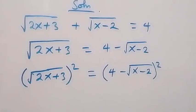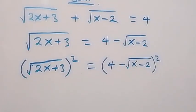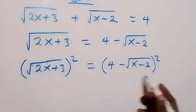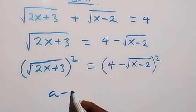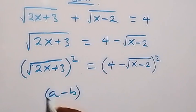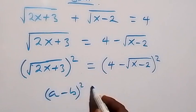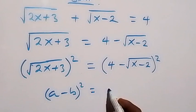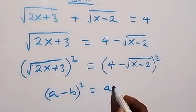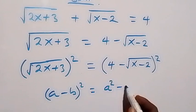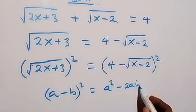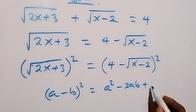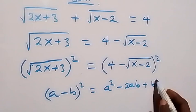Now from here, we can use the perfect square formula when we have (a minus b) squared. This will give us: a squared minus 2ab plus b squared.